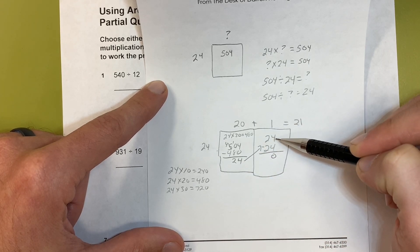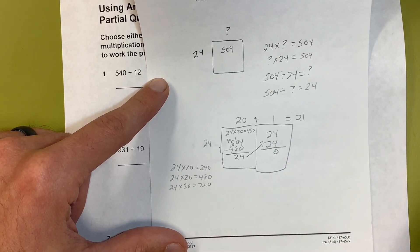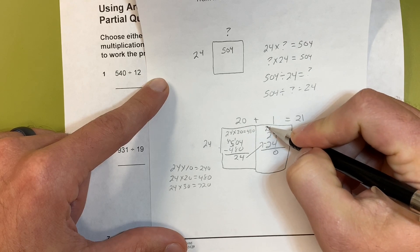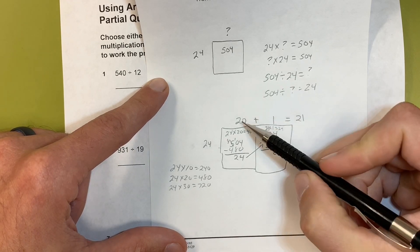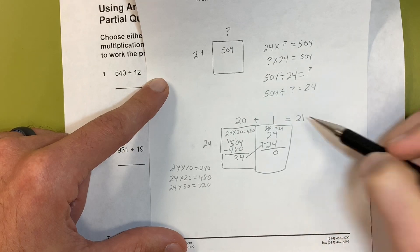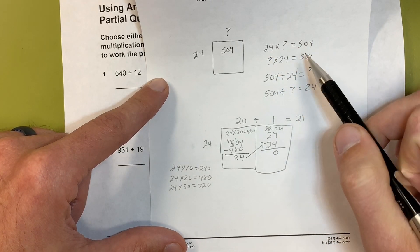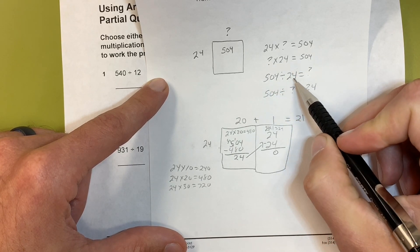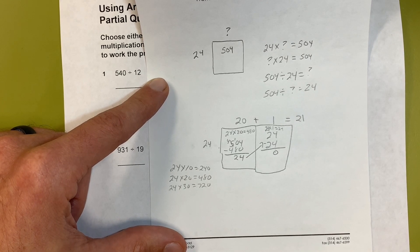I subtracted my 480 and came up with 24, so I put that in my next box. It doesn't matter how many boxes I do. This time I took out 20 and had 24 left. I know 24 times 1 equals 24, so I'm going to take that group out. I'm left with a group of 20 over here, 24 groups of 20, and one group of 24. I'm going to add those together, so my answer is 21. I know 24 times 21 equals 504, 21 times 24 equals 504, 504 divided by 24 equals 21, and 504 divided by 21 equals 24.